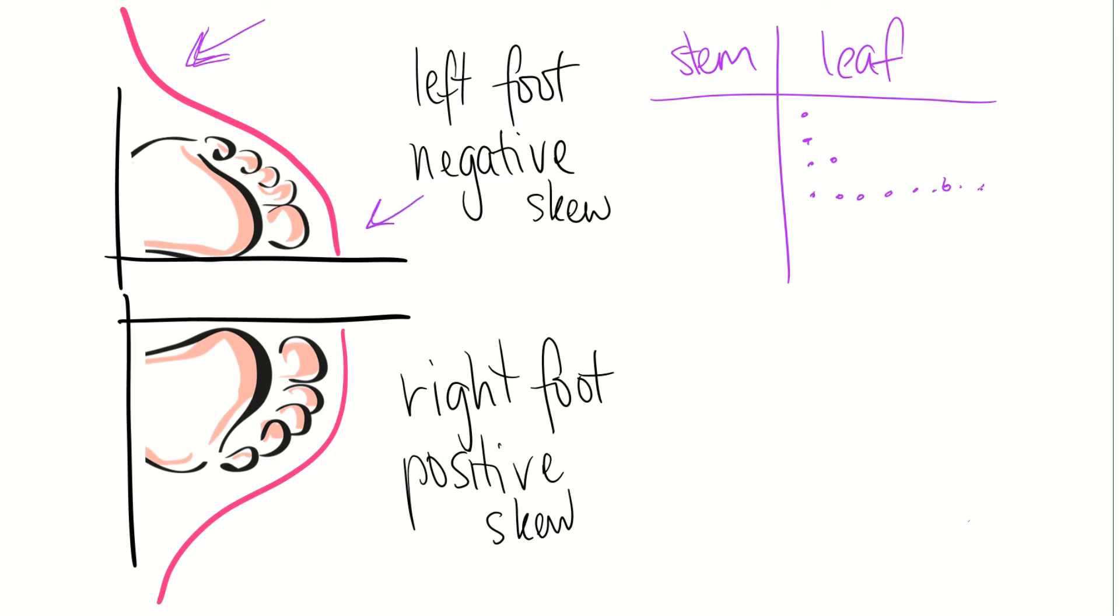But then, at the bottom, there's heaps of data. So this side. There's way more. There. That will give you a similar shape to your negative skew. Right there.